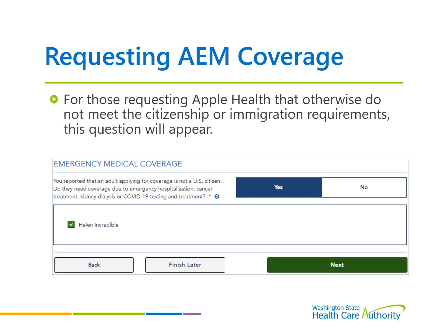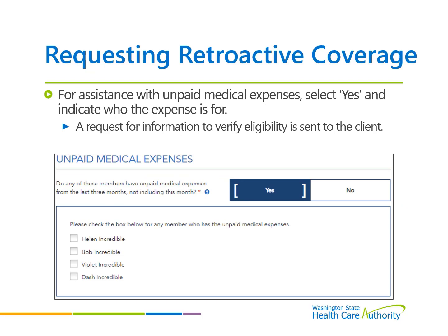AEM coverage, or alien emergency medical coverage, is for those requesting Apple Health coverage that otherwise do not meet the citizenship or immigration requirements. This coverage type is requested if coverage is needed for emergency hospitalization, cancer treatment, kidney dialysis, or for COVID-19 testing and treatment. Select whether this coverage type is needed for the persons listed. If a household member needs help to pay for unpaid medical expenses incurred within the last three months, select yes and indicate for whom the expense is for. Note that retroactive coverage is not automatically approved — a request for verification will be sent.